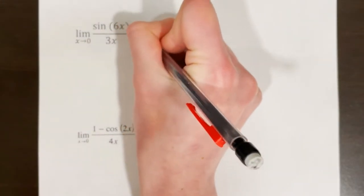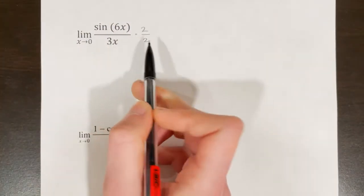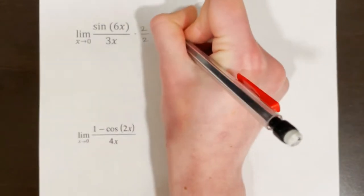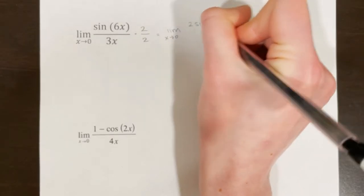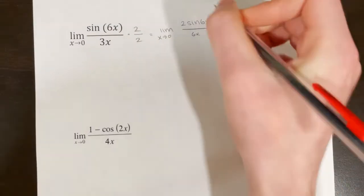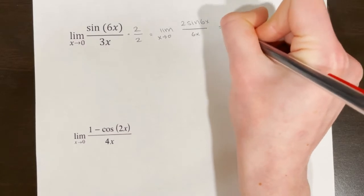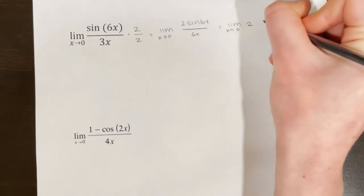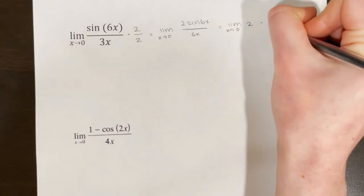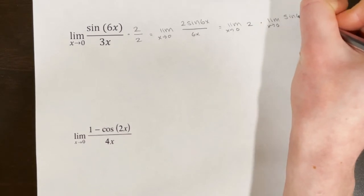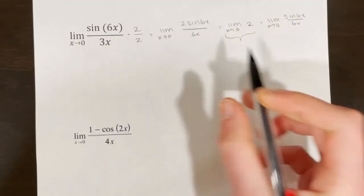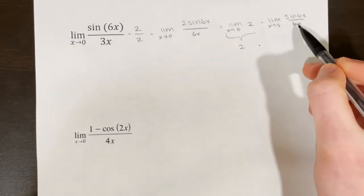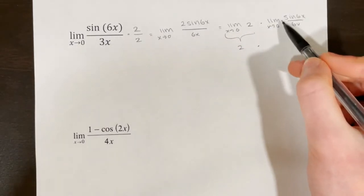So I'm going to multiply numerator and denominator by 2, because 3x times 2 is 6x. And I get the limit as x approaches 0 of 2·sin(6x) over 6x. Now I split into the limit as x approaches 0 of 2, times the limit as x approaches 0 of sin(6x) over 6x. I know that the first one is just going to equal 2, and from my identities, the second one is going to equal 1.